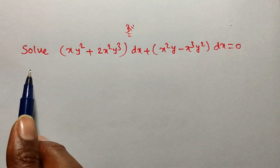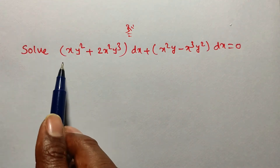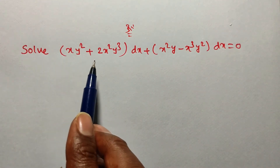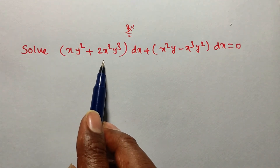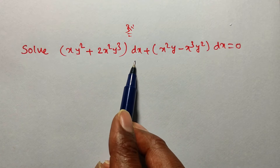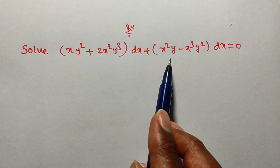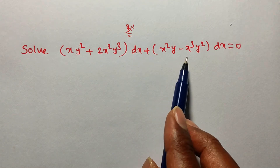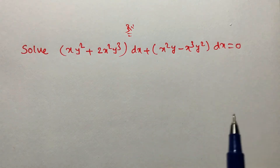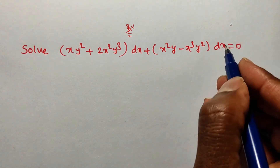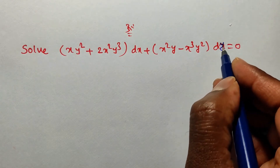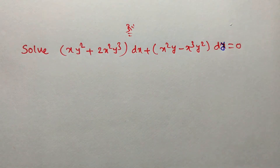The given problem is: solve (xy² + 2x²y³)dx + (x²y − x³y²)dy = 0.